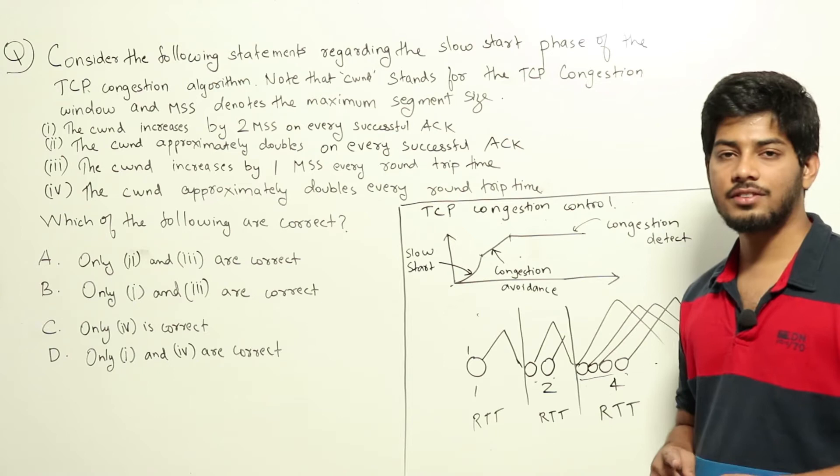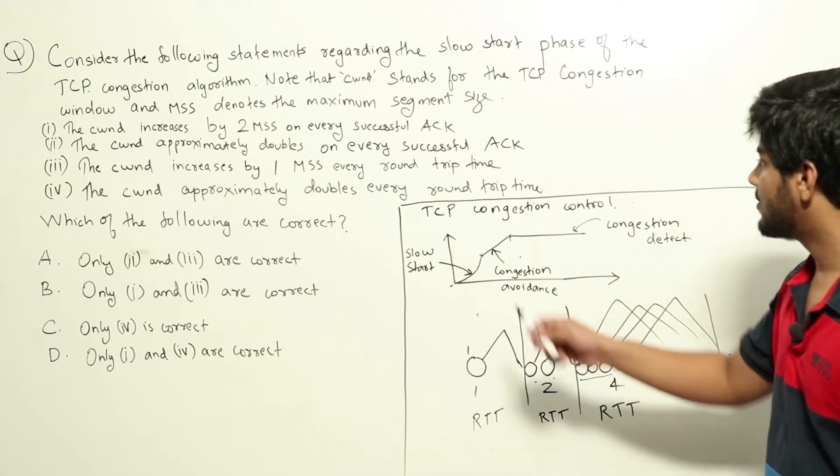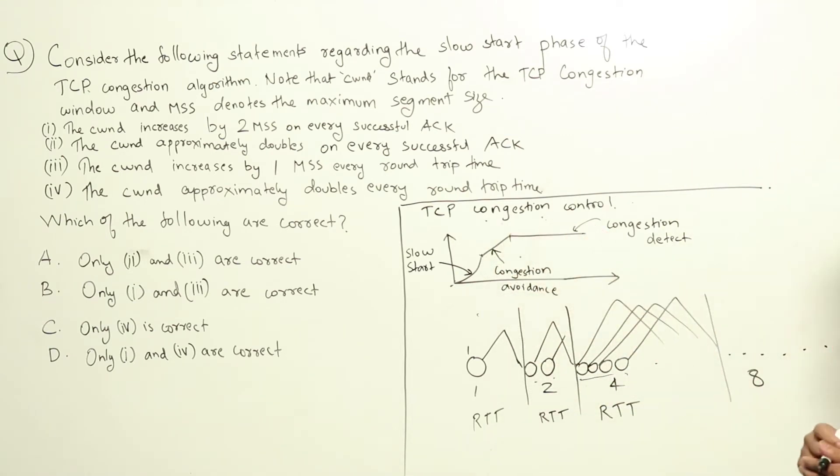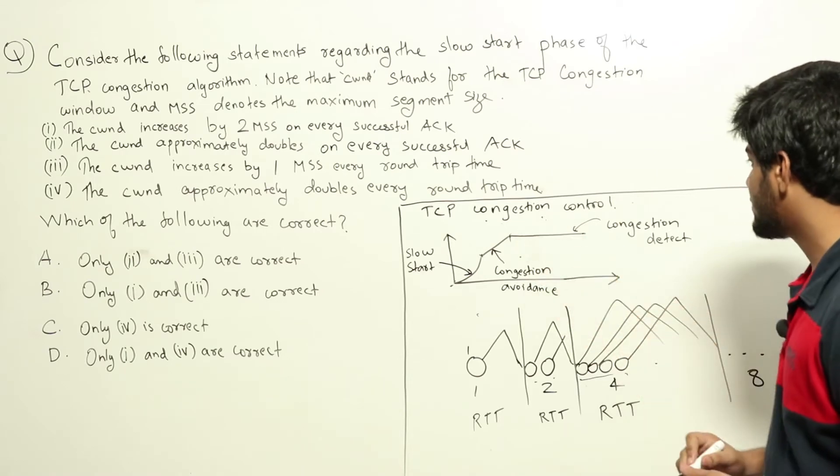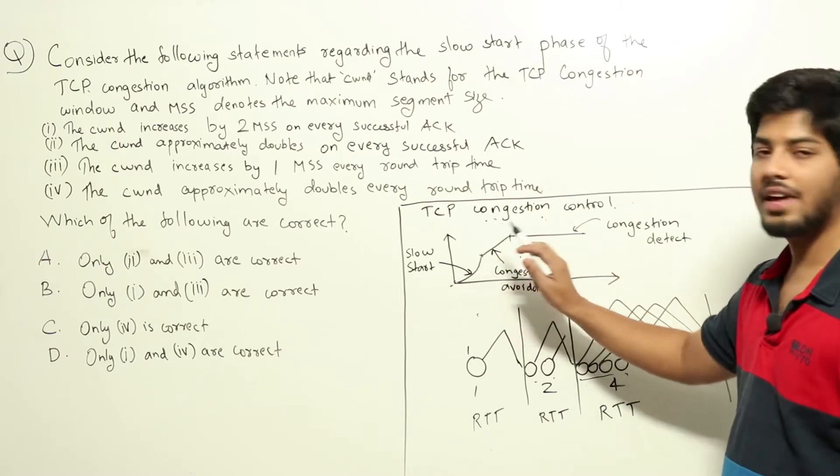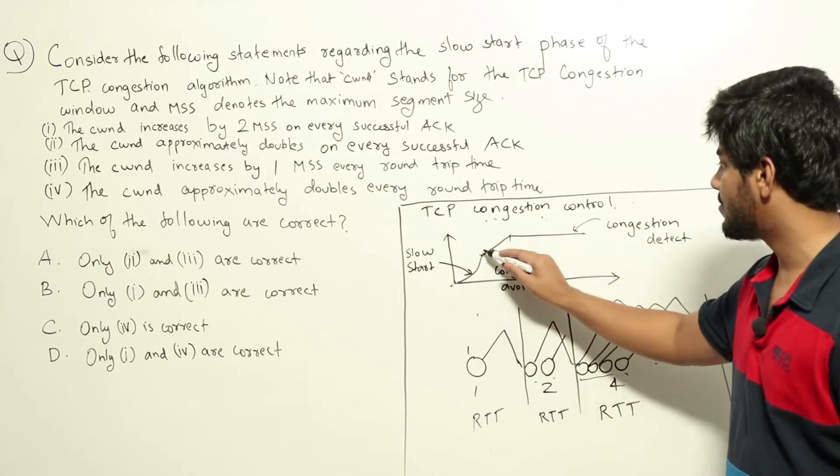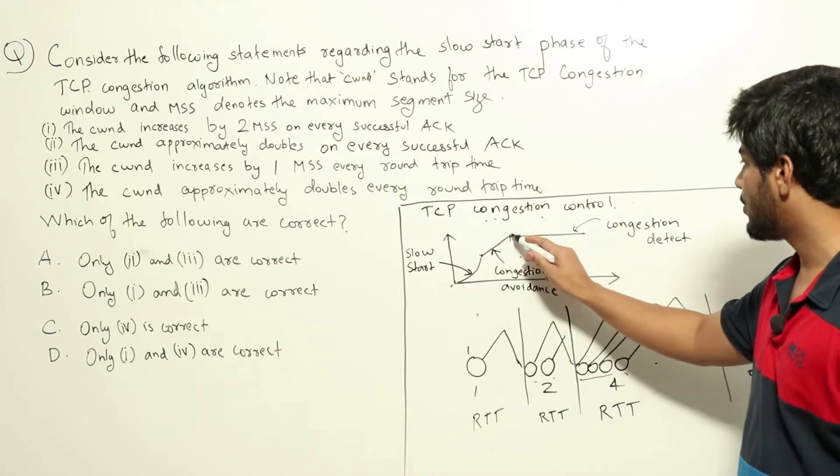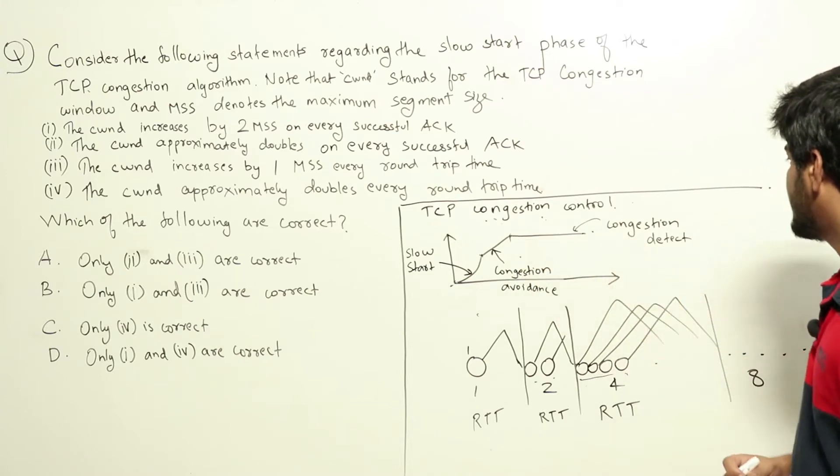Please refer to the lecture videos in the TCP section to understand how the TCP congestion control works. Initially, for TCP congestion control we have three phases: one is the slow start phase, then we have the congestion avoidance phase, and then we have the congestion detection phase.